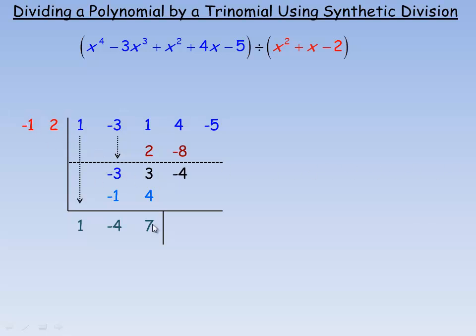And so one last time, negative 1 times 7 would be negative 7 here. And 2 times 7 is 14, so we put that number up here. Negative 4 and negative 7 add to negative 11. Negative 5 and 14 add to 9. And actually that 9 gets carried down here to go in the end. That's part of the remainder.